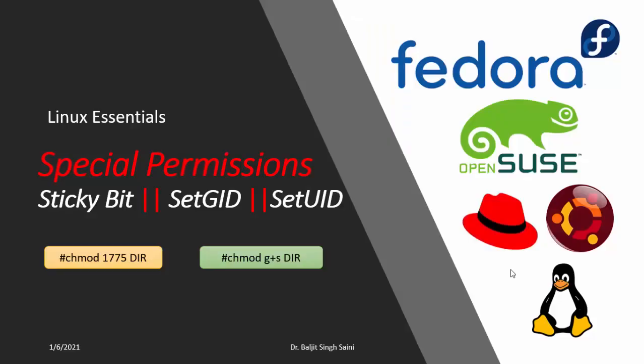Hello everyone. Today we are going to learn about three special permissions that we can set on files and directories. We have already used the chmod command to set the three basic permissions: read, write, and execute. Apart from these, we can also set certain special permissions which can help to safeguard the contents of a directory or change the group ownership of the directory to the contents within it. In this lecture we are going to study about sticky bit, setGID, and setUID.